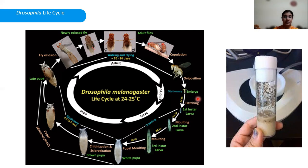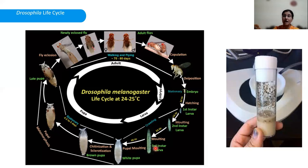The molts and intermolt larval growth are regulated by the hormones ecdysone and juvenile hormone. The first, second, and third instar larvae remain in the food, actively feed, and increase their body size. Later, third instar larvae come out of the food and crawl in search of a dry place, commonly the wall of the culture vial. The larva adheres to such dry places using a glue protein secreted by the salivary gland, following which they undergo the last molt to begin their pupal stage.